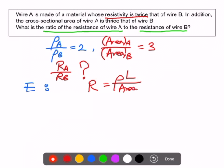P for proportional: the two wires that we are comparing have different cross-sectional areas and different resistivities. Length is not mentioned, so we assume that length is the same.